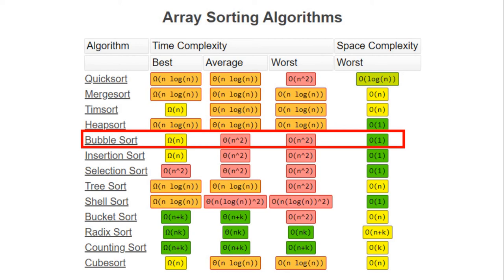Quick Sort, Merge Sort, Insertion Sort, Bucket Sort, and Radix Sort are the frequently used algorithms. The red color denotes that it is a bad performing algorithm and the green represents it is a better performing algorithm. Looking at time complexity, Bubble Sort has an average case of O(n²) which is very bad — one of the worst time complexities you could see for a sorting algorithm.